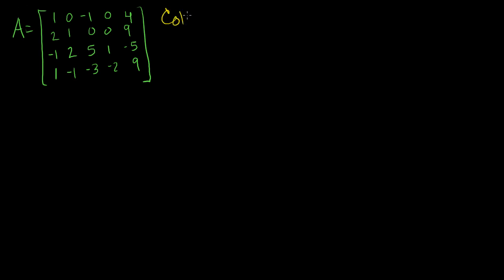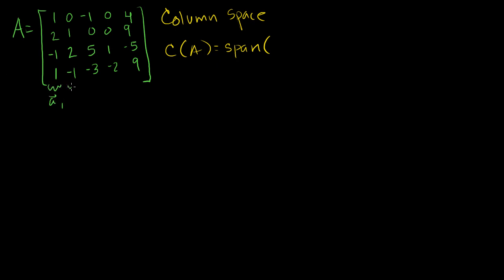We've seen in several videos that the column space of a matrix is pretty straightforward to find. The column space of A is just equal to all of the linear combinations of the column vectors of A. Another way of saying all of the linear combinations is just the span of each of these column vectors. We call them A1, A2, A3, A4, and A5. The column space of A is just equal to the span of A1, A2, A3, A4, and A5.